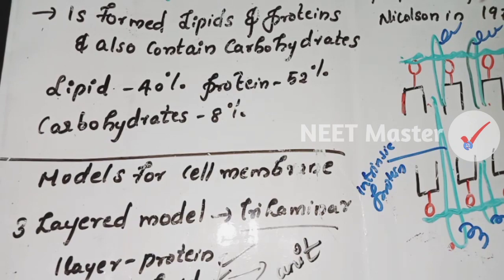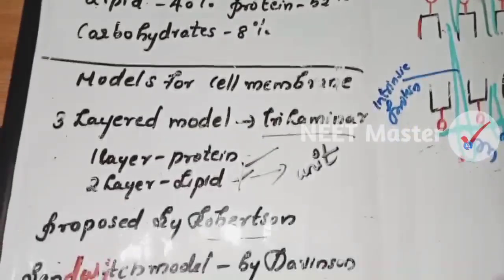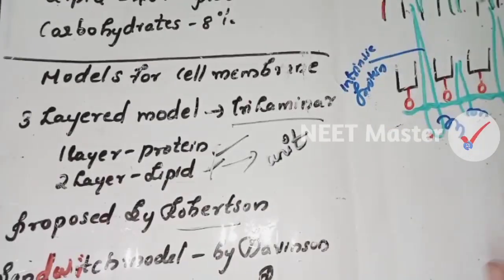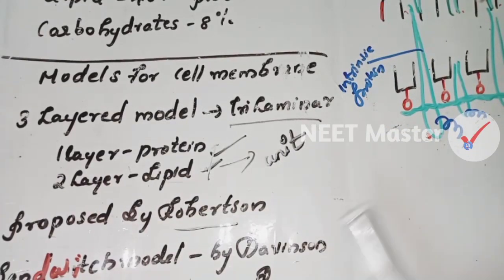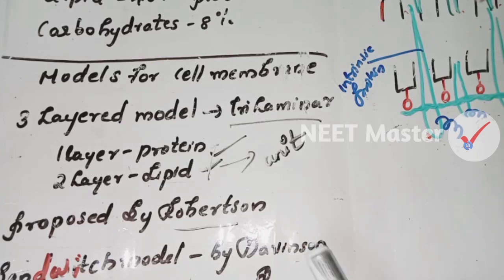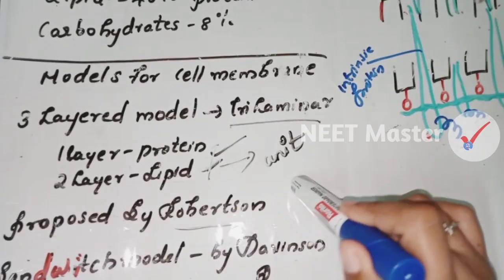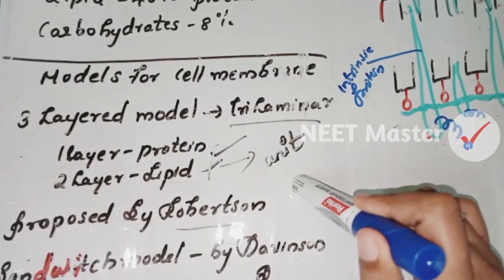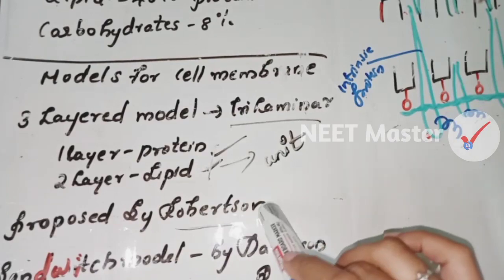The first model is the Trilaminar model — that is a 3-layer model. It means one layer of protein on each side with lipid in between. It can be considered a unit membrane. That is the Trilaminar model, proposed by Robertson.